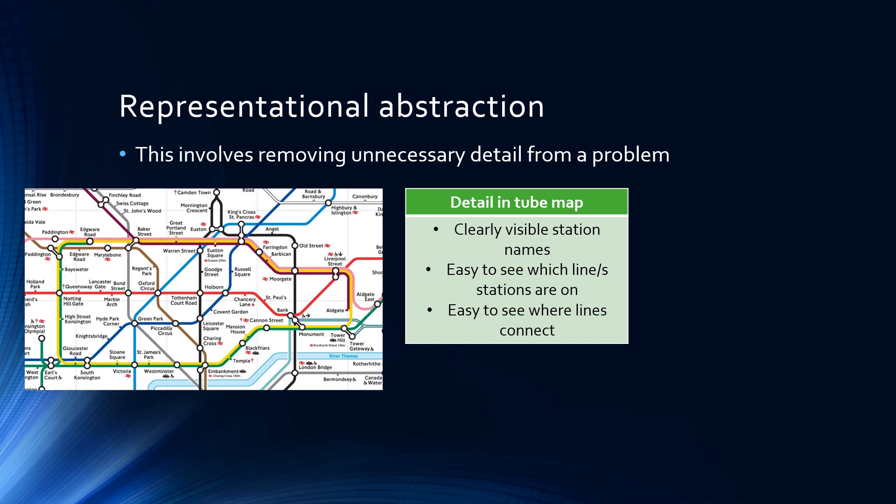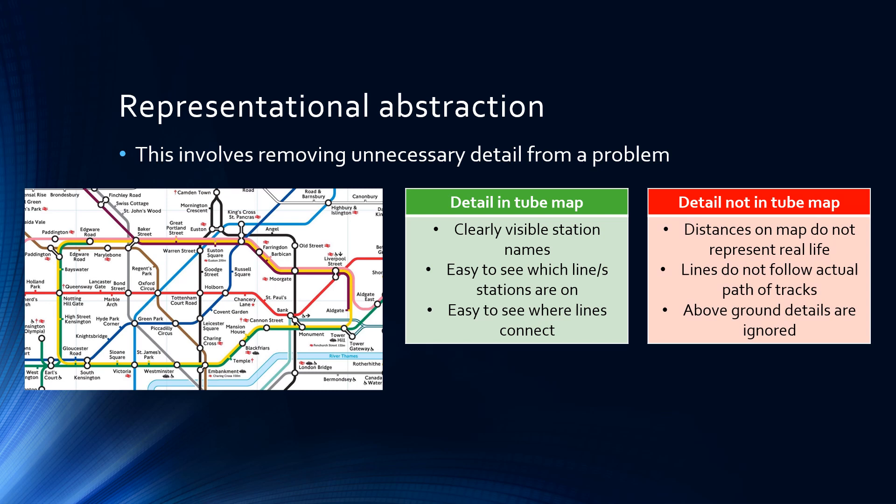However, some of the detail not included in the tube map that's been abstracted away includes that distances on the map do not represent real-life distances, lines do not follow the actual paths of the track, and above-ground details are largely ignored. There are many other differences as well.